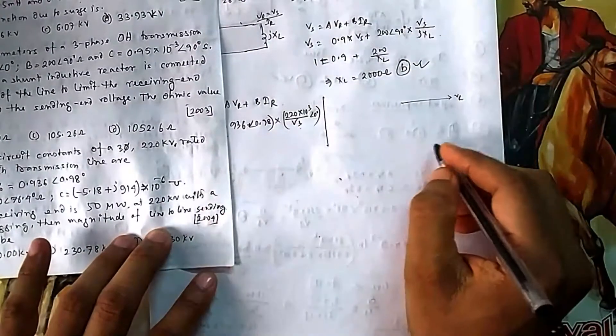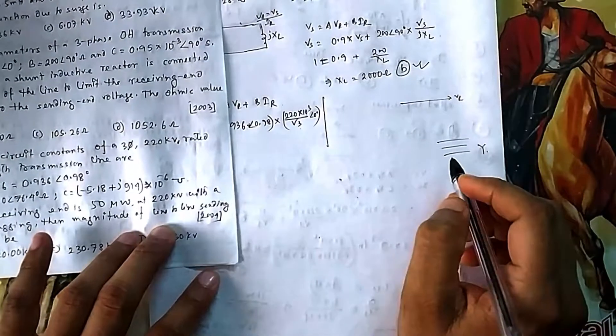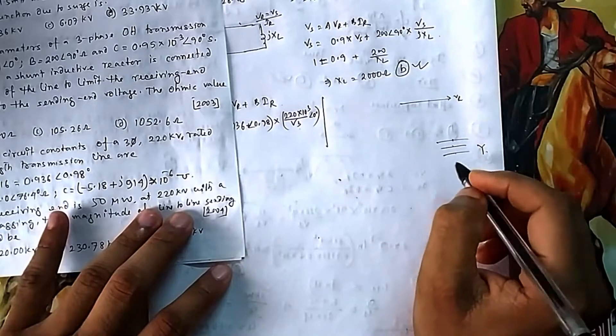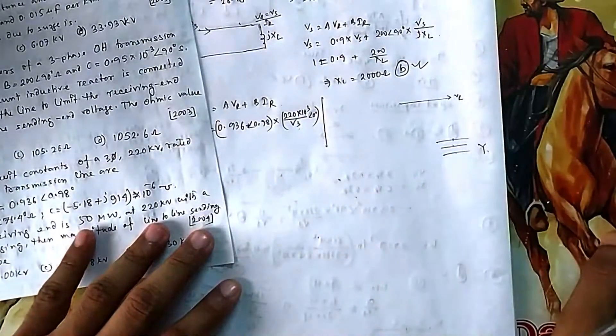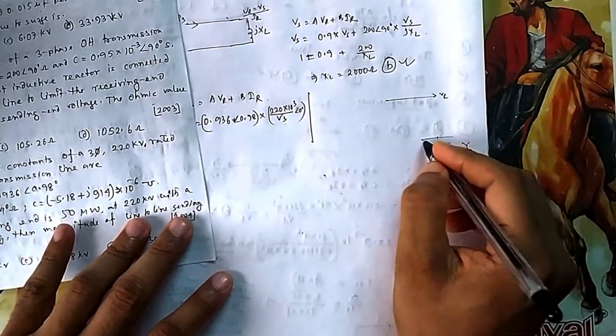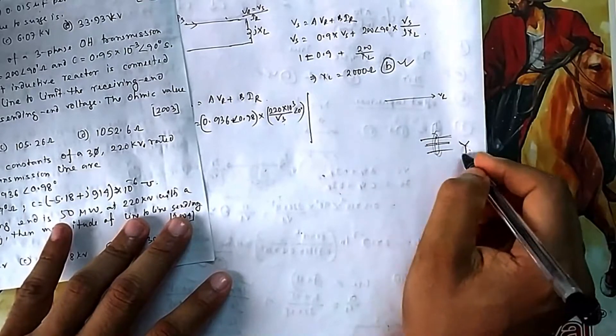Transmission lines by default are always star connected. Every time 220 is given between phase to phase, so per phase it will be 220/√3. In case of current, per phase current will be IL, and Iphase will be the same because we're considering star connected. Always assume your transmission line is star connected.